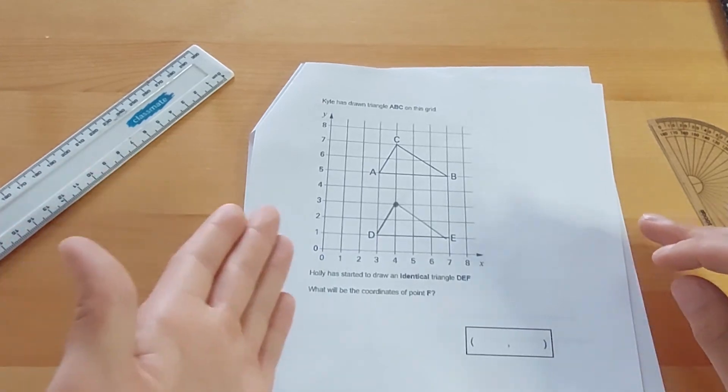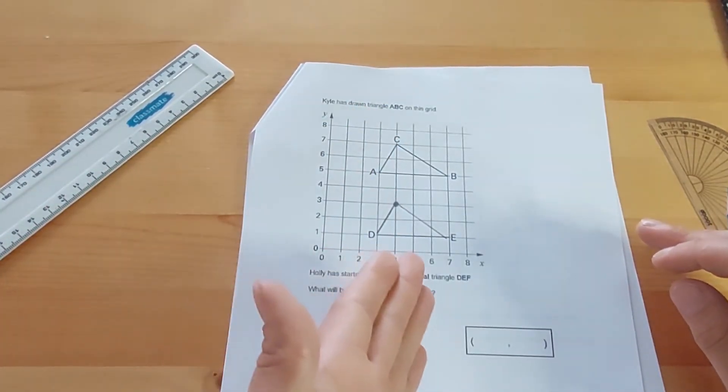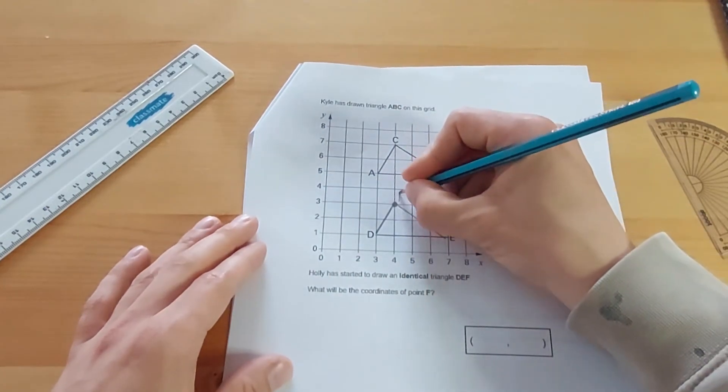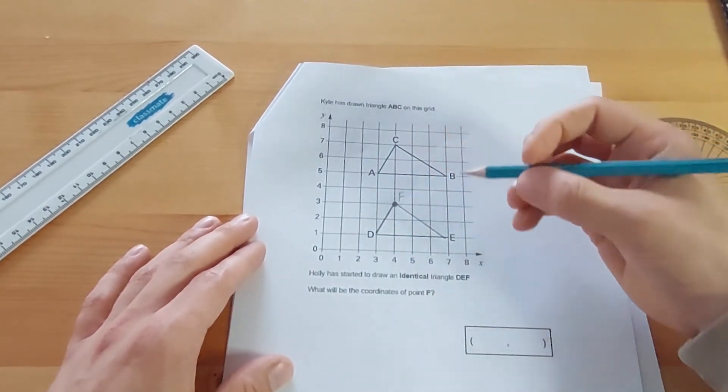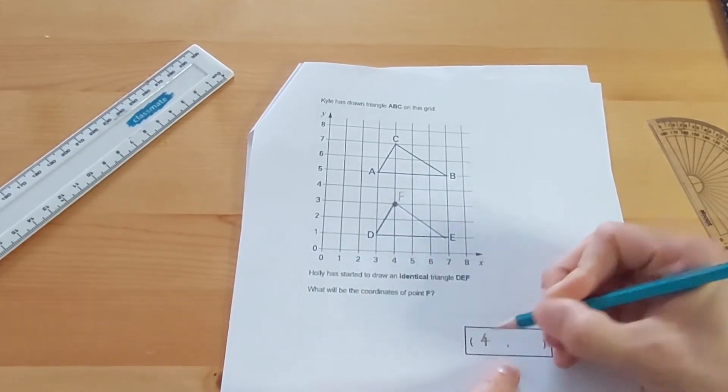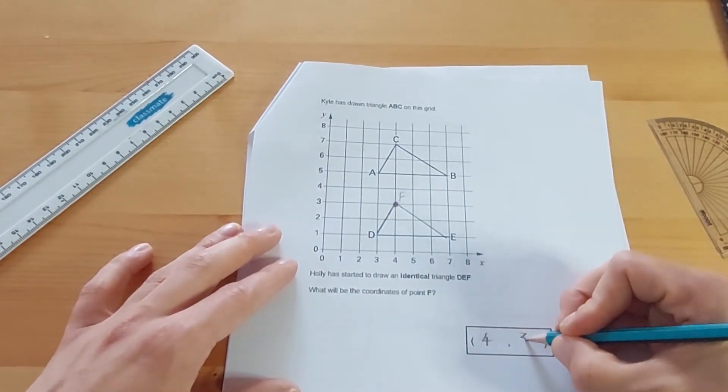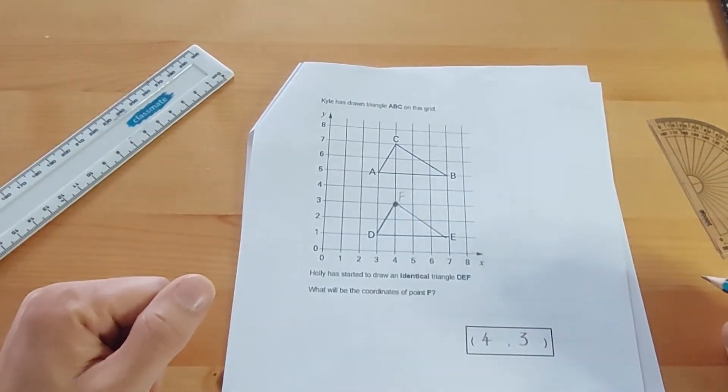Remember the rule? Along the corridor, up the stairs. What will the missing coordinate F be? I can even mark F to help me if I want to. Along the corridor, four. This time the bracket and comma is given, so that's my first number. And up the stairs, three. And they would also receive a mark for that question.